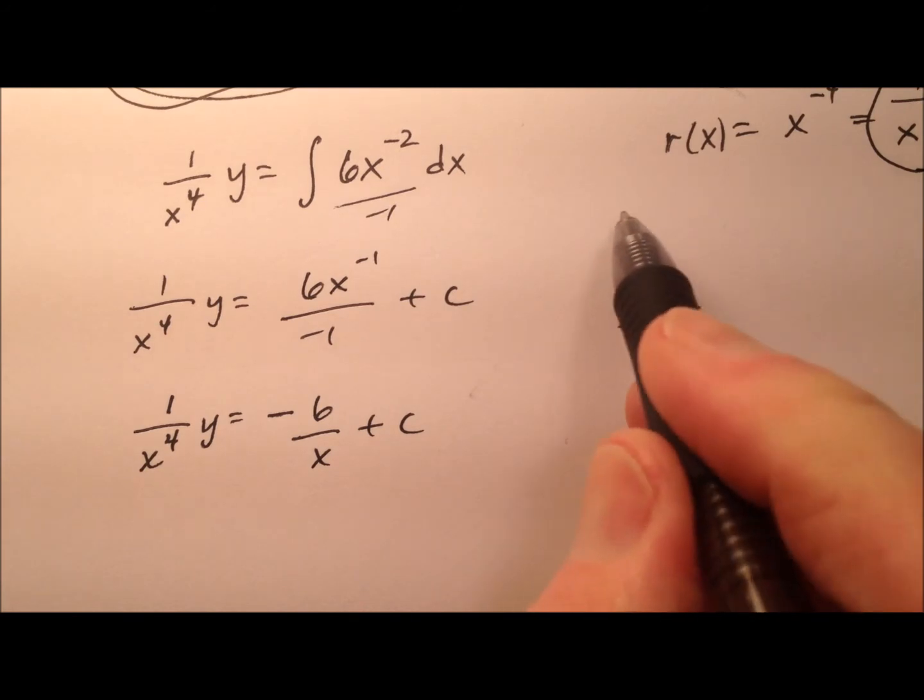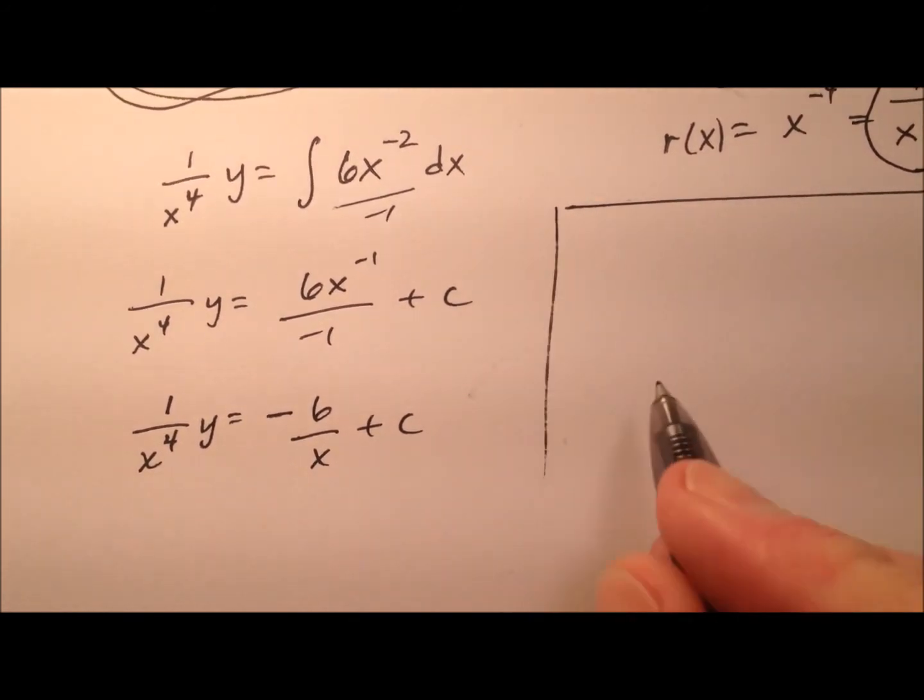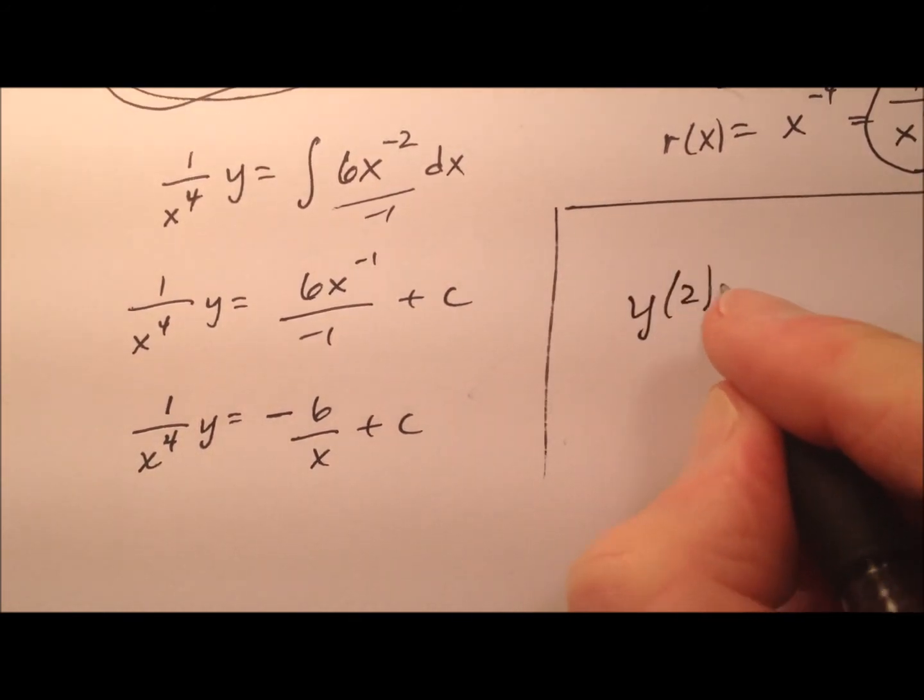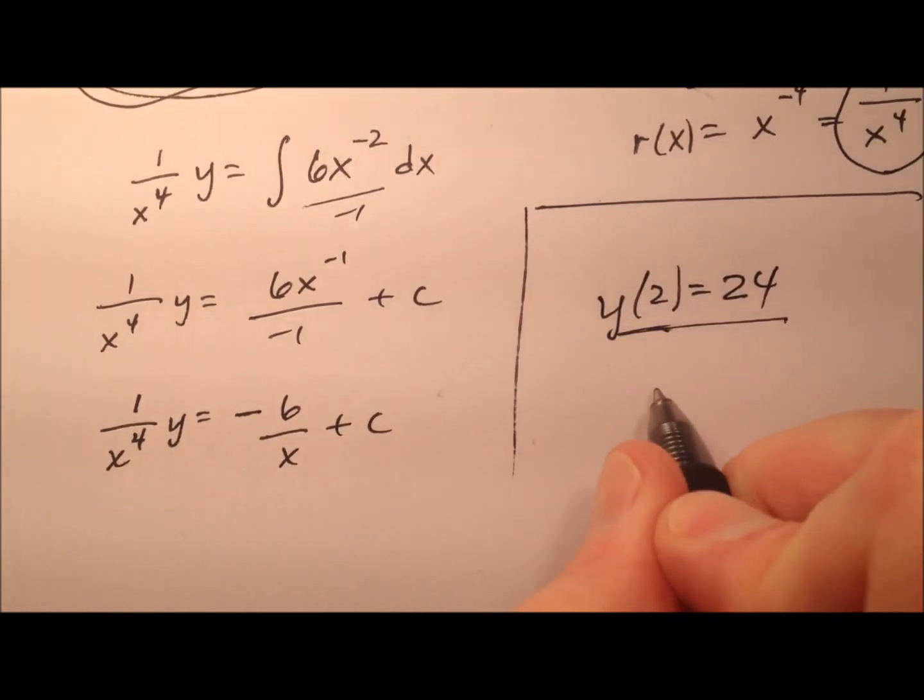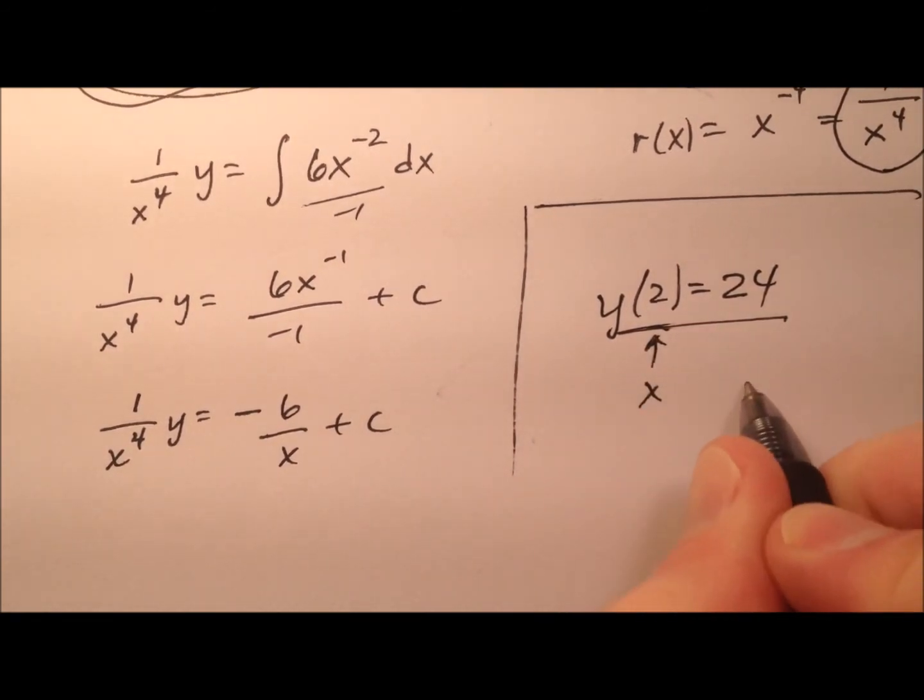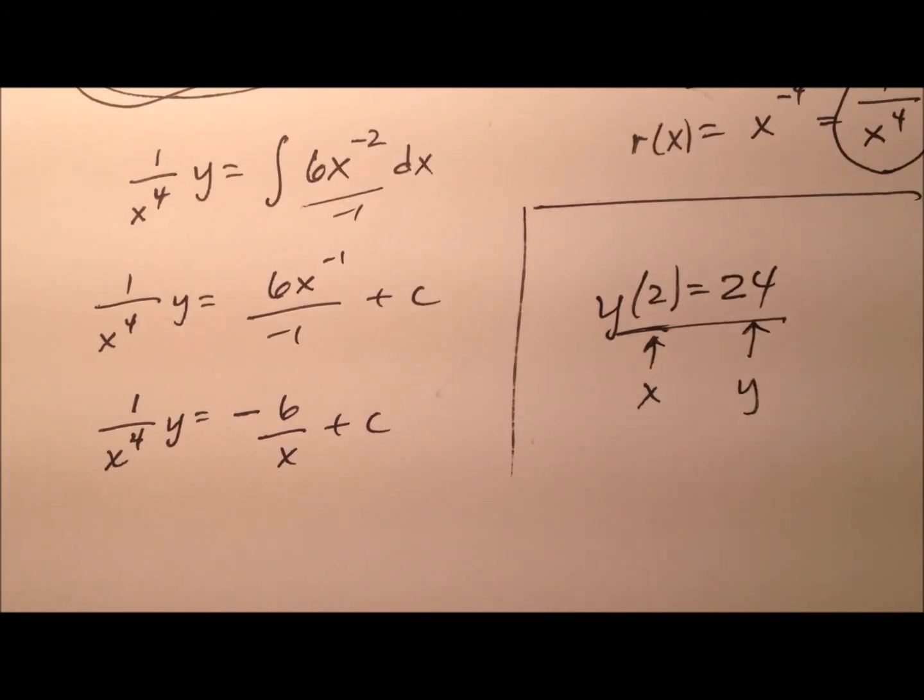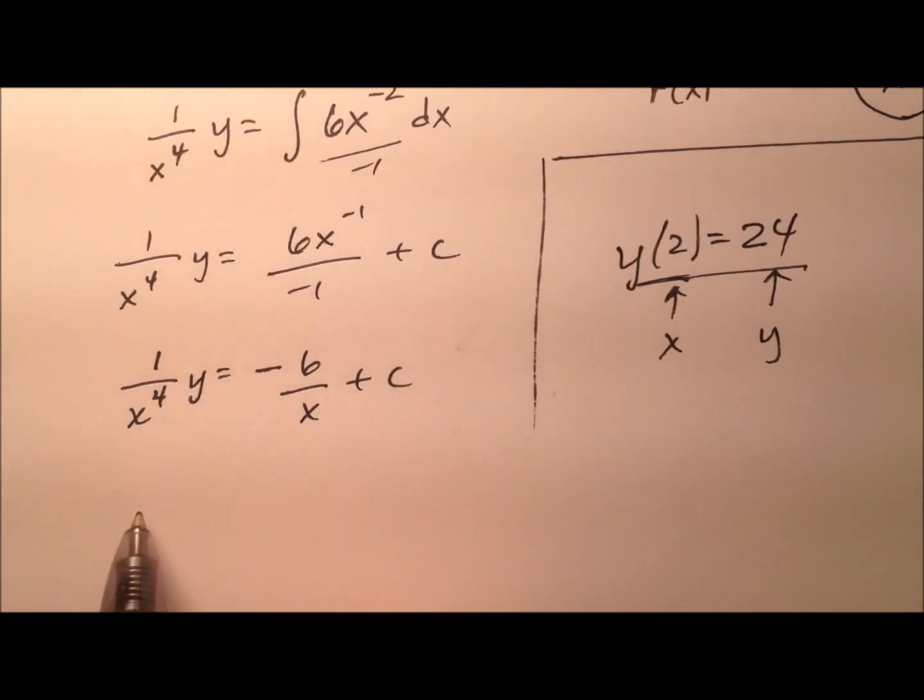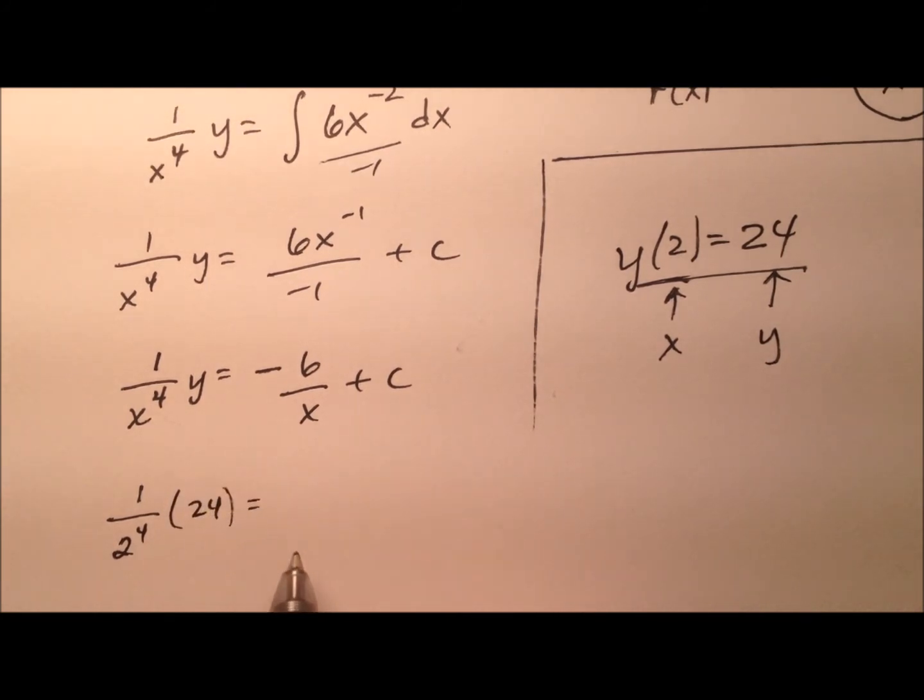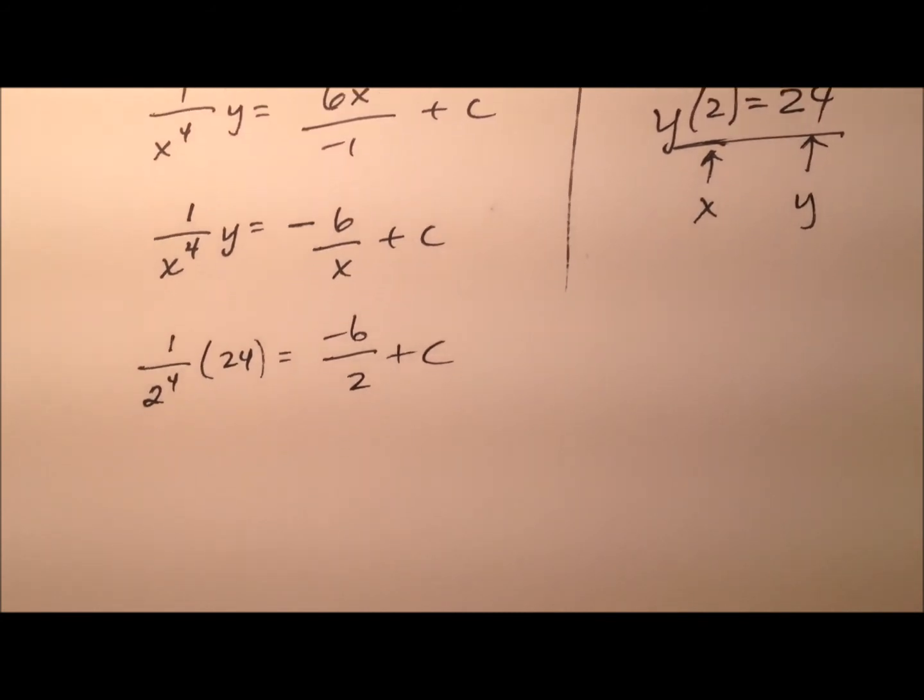So I think at this point would be a good time to go ahead and use our initial condition, y of 2 equals 24. So that means my x value is the 2. My y value is the 24. So let's go ahead and plug everything in here that we know and solve for c.